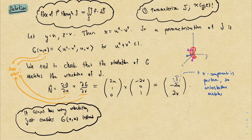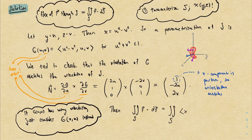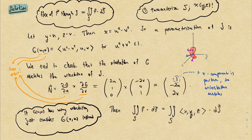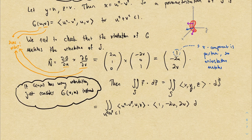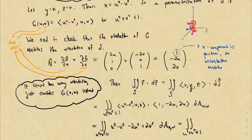From here it's straightforward. We care about the surface integral of f, where f = (x, y, z). Converting to a double integral, we get the vector (u² − v², u, v) dotted with the normal vector (1, −2u, 2v), integrated over the region u² + v² ≤ 1. Multiplying out the dot product and simplifying gives a double integral over the unit disk.